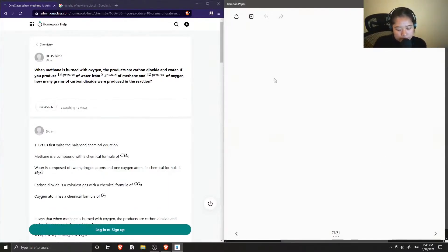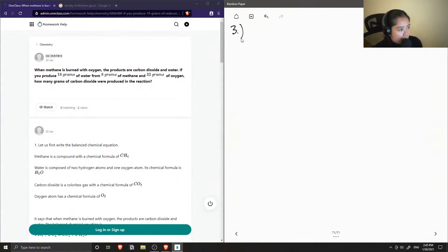Question number three. When methane is burned with oxygen, the products are carbon dioxide and water. If we produce 18 grams of water from 8 grams of methane and 32 grams of oxygen, how many grams of carbon dioxide were produced in the reaction?